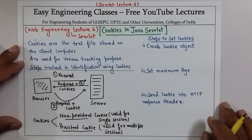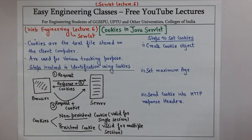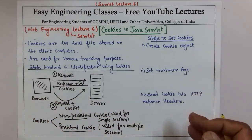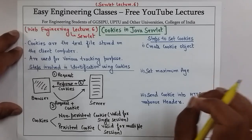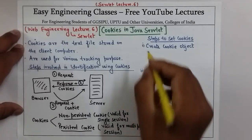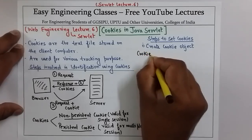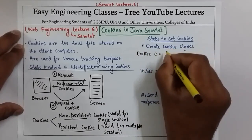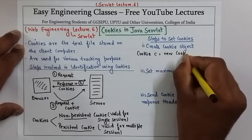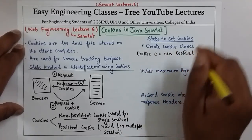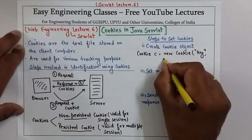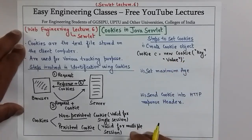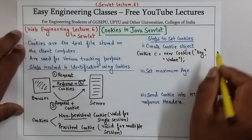Now we will see the steps to set cookies in Java servlet. There are basically three steps: first, you have to create a cookie object; second, set the age of the cookie; and third, send the cookie in the HTTP response header. To create a cookie object, you call the cookie constructor with a cookie name and value — for example, Cookie c = new Cookie("key", value).